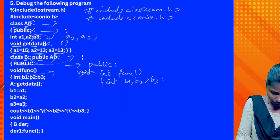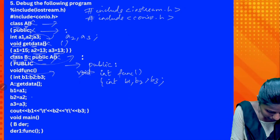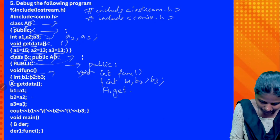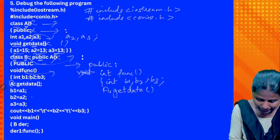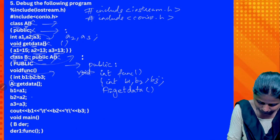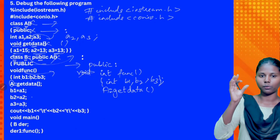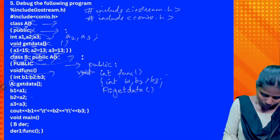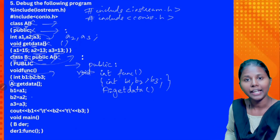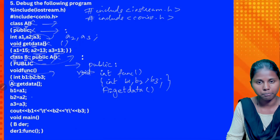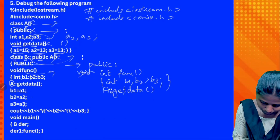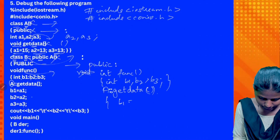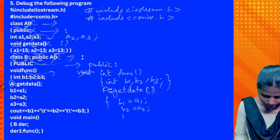b2, b3. And then we come to the scope resolution operator — so get data function in brackets. This semicolon is also defined — so b1 is equal to a1, then b2 is equal to a2, b3 is equal to a3.